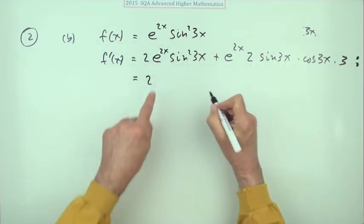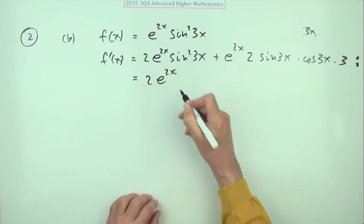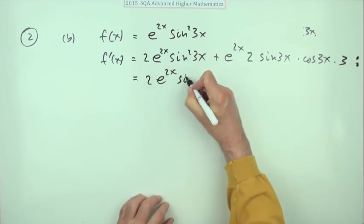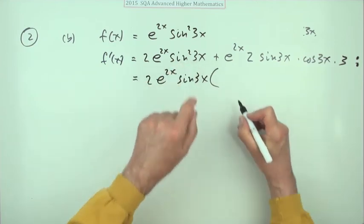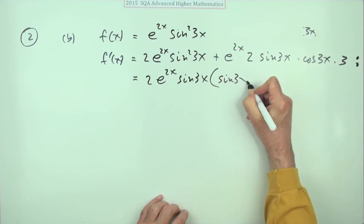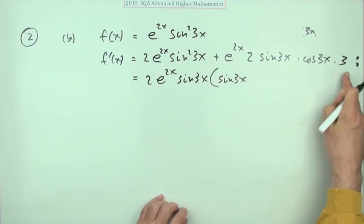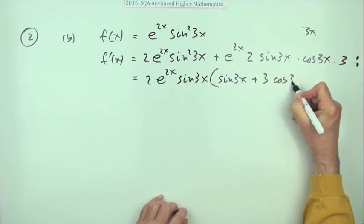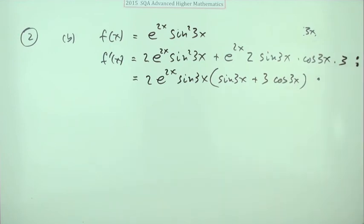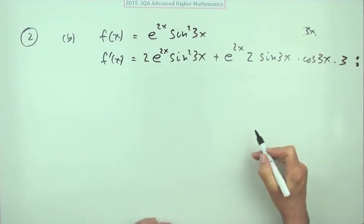If you were to go for the route of let's just pull out all the common factors, you'd look through and say I've got a 2, I've got e to the 2x, I've got a sine 3x, and then I'll see what I've got left I've not used yet. So I've not used sine 3x here, and from this bit I've not used the 3 and I've not used the cos 3x. So that would do.